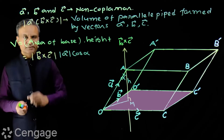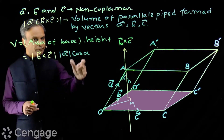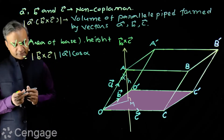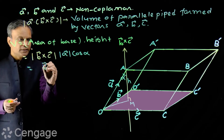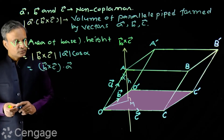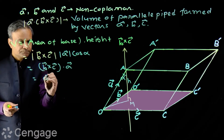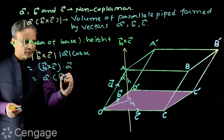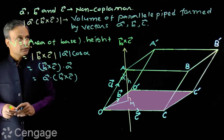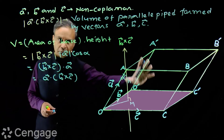Which product does this represent? The modulus of B cross C times the modulus of A times cos alpha, where alpha is the angle between vectors B cross C and A — this is exactly the dot product (B cross C) dot A. So this equals the scalar triple product A dot (B cross C). It is thus proved that the STP represents the volume of the parallelepiped.